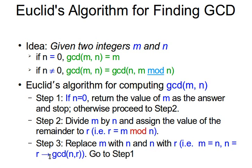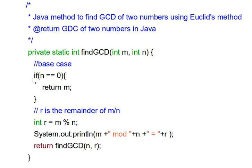Now we replace m with n and n with r — the GCD becomes GCD(n, r) instead of GCD(m, n). Then we go back to Step 1: check the value of n; if it's zero return m, if not continue by finding the mod and replacing m with n and n with r. Note that when we reach Step 1 again with n and r, n will play the role of m and r will play the role of n.